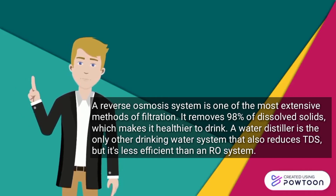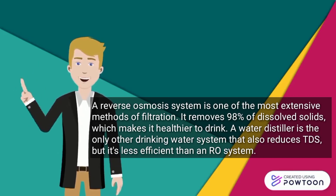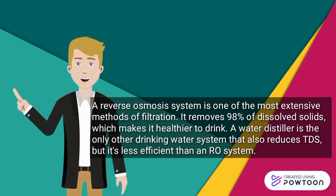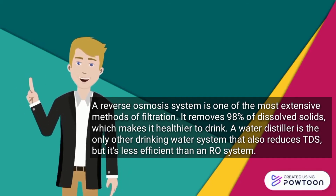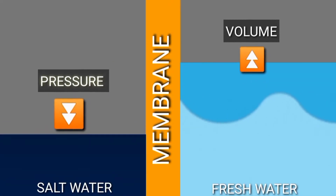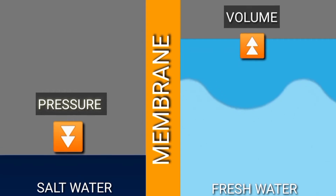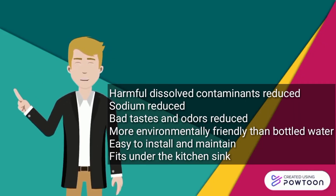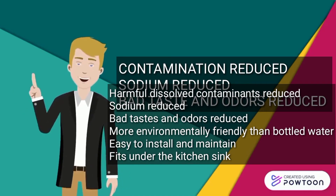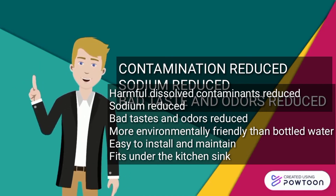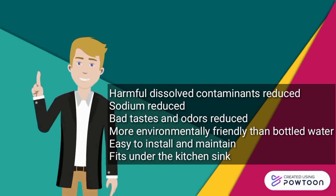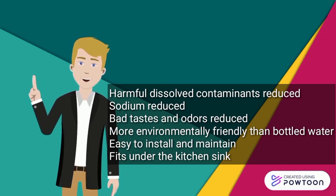A reverse osmosis system is one of the most extensive methods of filtration. It removes 98% of dissolved solids, which makes it healthier to drink. A water distiller is the only other drinking water system that also reduces TDS, but it's less efficient than an RO system. Benefits include: harmful dissolved contaminants reduced, sodium reduced, bad tastes and odors reduced, more environmentally friendly than bottled water, and easy to install and maintain — fits under the kitchen sink.